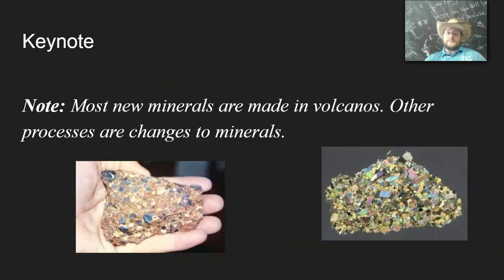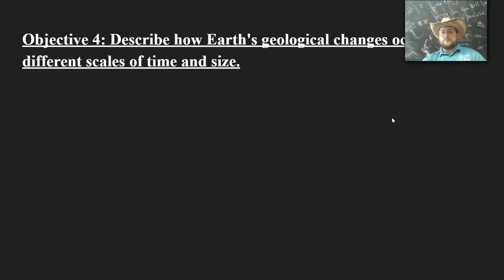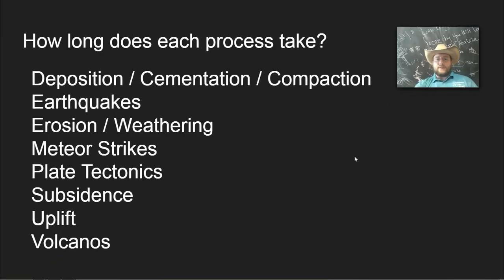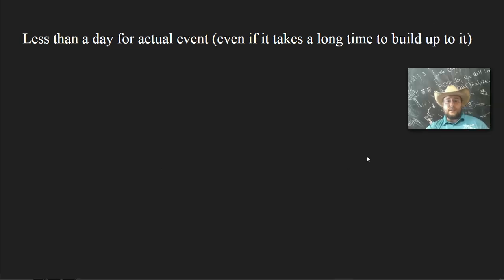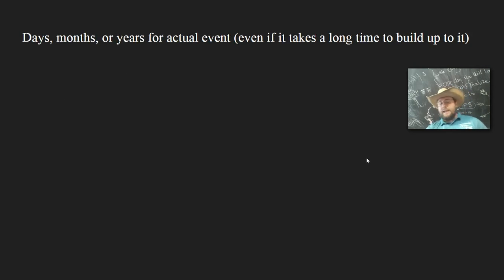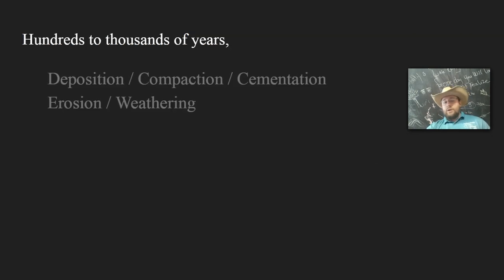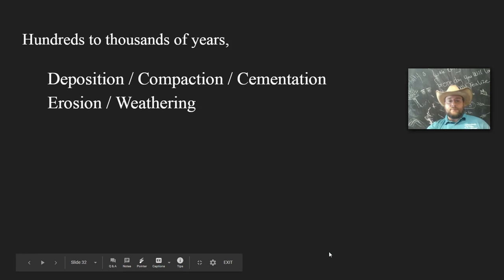All of these processes take different amounts of time to take place. By the way, new chemicals are usually coming from volcanoes. The amount of time depends on the process. Things like earthquakes and meteorite strikes are very quick. They happen suddenly, even if it takes a long time to build up to it. Then you have volcanoes, which can last days, months, or years for the actual eruption, even if it takes millions of years to build up to it. The erosion of rocks and forming of new rocks by deposition, compaction, and cementation can take a very long time, from hundreds to thousands to even millions of years.